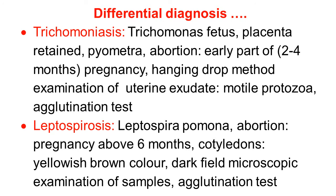Continuing with the differential diagnosis: trichomoniasis is caused by Trichomonas fetus. Abortion occurs in the early part of pregnancy, that is 2 to 4 months. Trichomoniasis can be diagnosed by the hanging drop method, by examination of uterine exudate, where clinicians can find motile Trichomonas fetus. It can be confirmed by agglutination test.